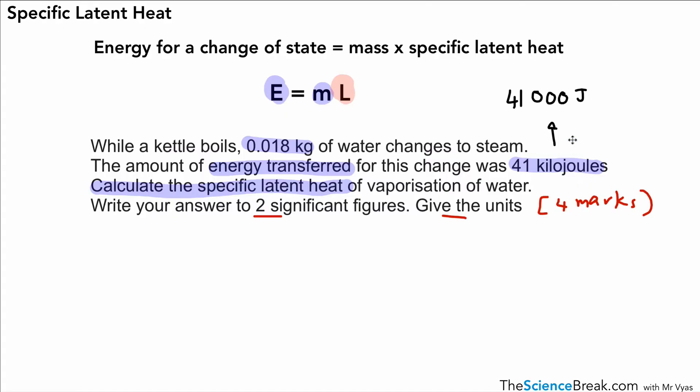Then we can use our equation. If we substitute in the numbers, we've got 41,000 = 0.018 × L. We can rearrange the equation by dividing both sides by 0.018. If that's a little bit confusing, we can use our little hack over here—we can do our formula triangle or equation triangle. We're working out L, so it's E divided by M, which we've shown in our calculation there. Once we put that into our calculator, we get an answer of 2,277,777.78.